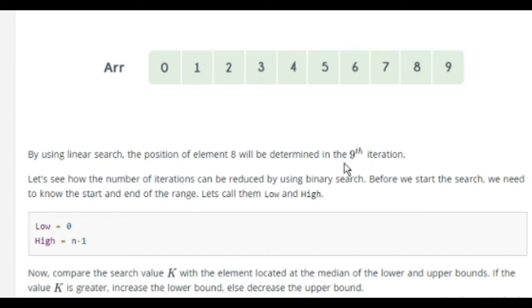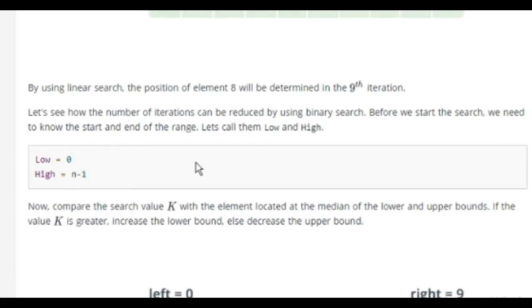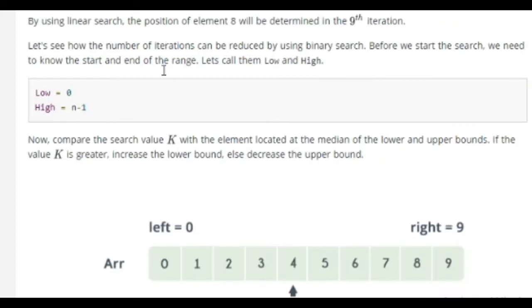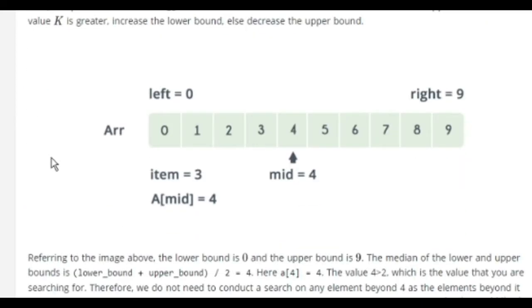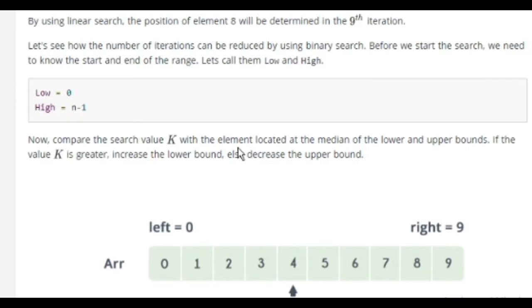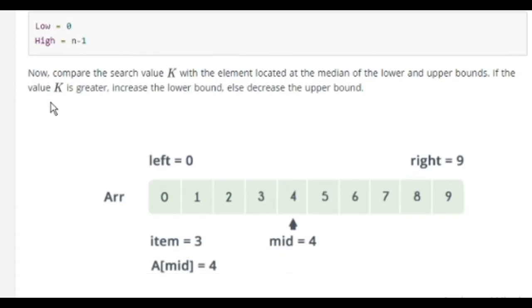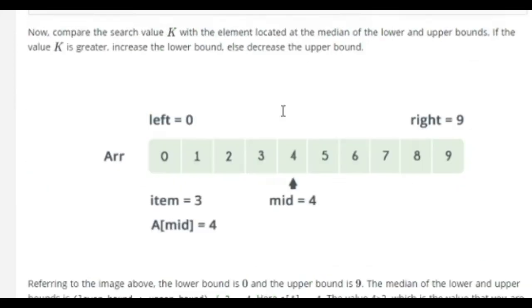By using linear search, the position of element 8 would be determined by the 9th iteration. Let's see how the number of iterations can be reduced by using binary search. Before we start the search, we need to know the start and end of the ranges. Let's call them Low and High. The Low is 0 and the High is n-1, that is 9. Now compare the search value K with the element located at the median of the lower and upper bounds. If the value K is greater, increase the lower bound, else decrease the upper bound.